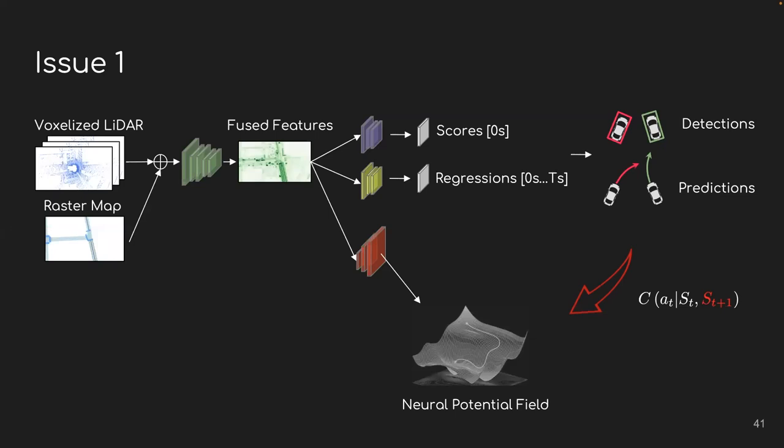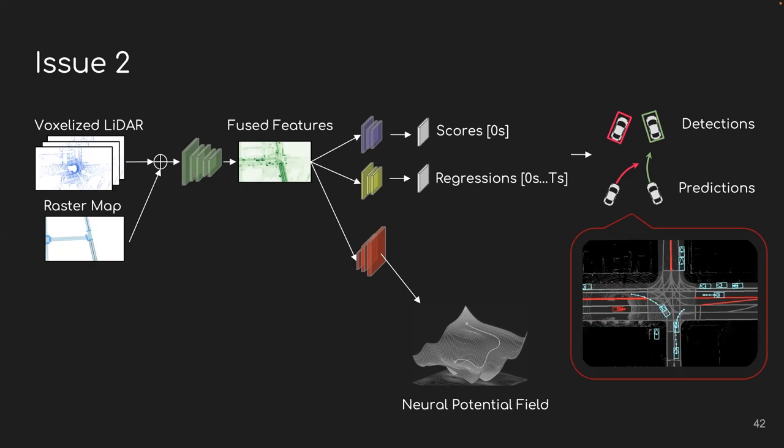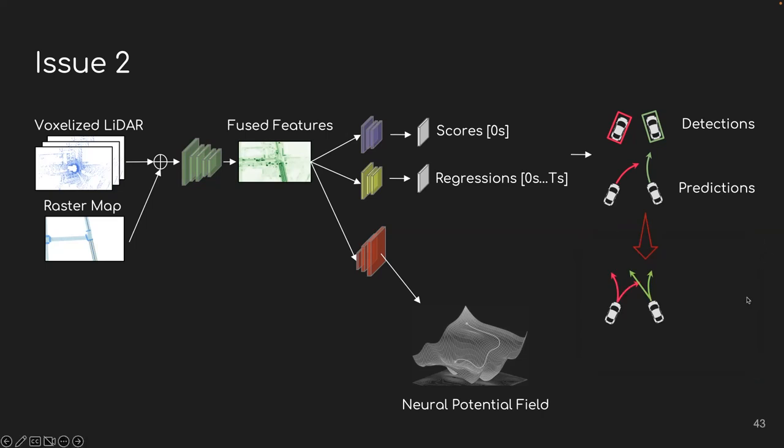It looks pretty promising with a lot of interesting quantitative and qualitative results, but there are still limitations. First, right now we conduct planning and predictions separately, but there are actually highly coupled problems. In addition to that, right now we only predict a single trajectory for each actor, but the real world is complex and stochastic. So what we really need is to capture complex interactions among actors and predict multiple possible futures with uncertainty estimations.